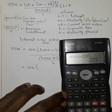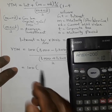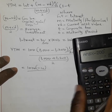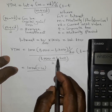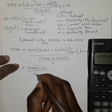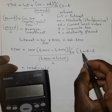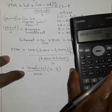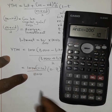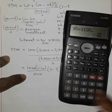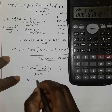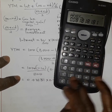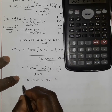So we have 100 plus negative 10, which equals 90. The denominator is M plus VD divided by 2: 1000 plus 1200 divided by 2 = 1100. Then we multiply everything by 1 minus t, which is 1 minus 0.3 = 0.7.